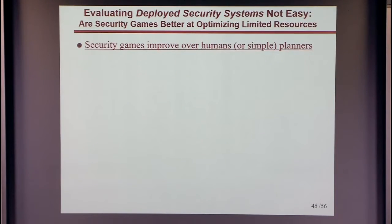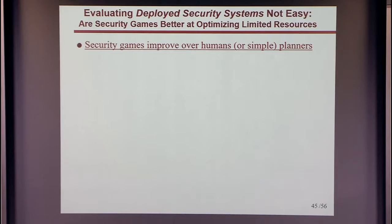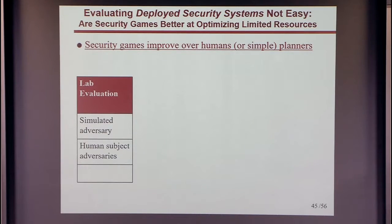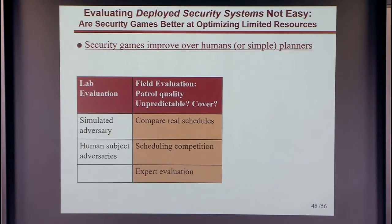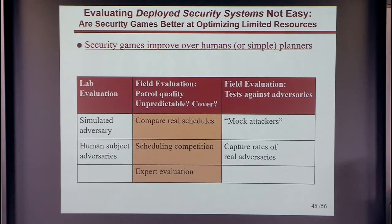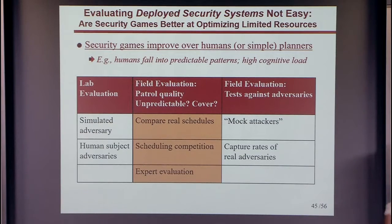The claim is that these security games lead to significant improvement over how humans plan security resource optimization. Evaluation approaches include lab experiments, simulations, human adversaries, field measurements of patrol quality before and after deployment, scheduling competitions between humans and game theory, and field tests catching real violators. With all of these, the software leads to significant improvement over human schedulers and simple tools previously used, largely because of the very high cognitive load these scheduling tasks impose on humans.